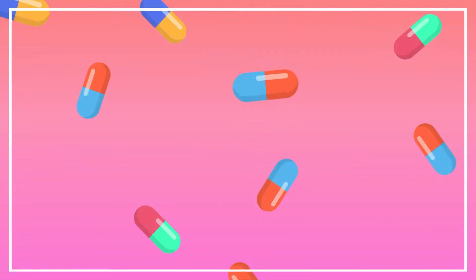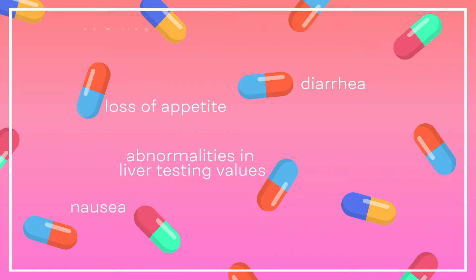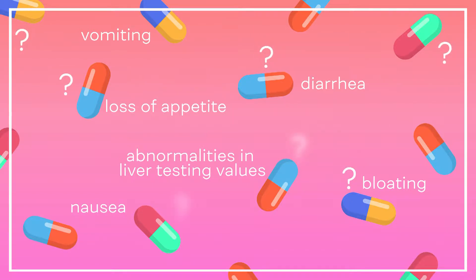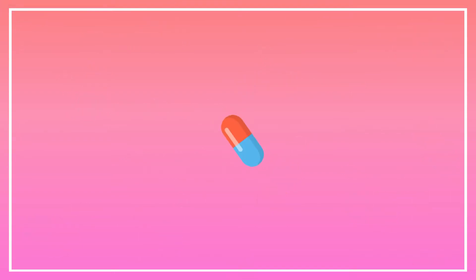As many of the antibiotics used to treat NTM lung disease can cause similar side effects, it can be difficult to determine the culprit antibiotic in a multi-drug regimen. For example, multiple antibiotics used to treat NTM can cause GI upset or abnormalities in liver testing values. If it is not apparent which antibiotic is causing serious adverse events, it may be necessary to discontinue the entire multi-drug regimen and add back antibiotics in a stepwise fashion.